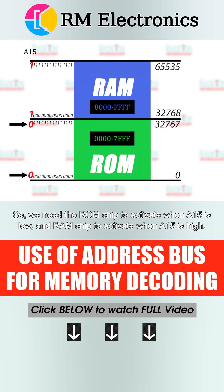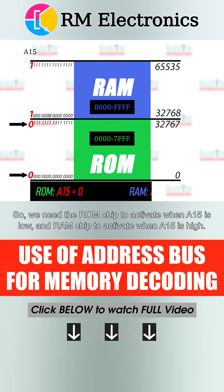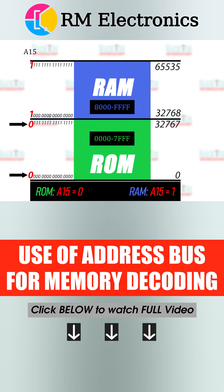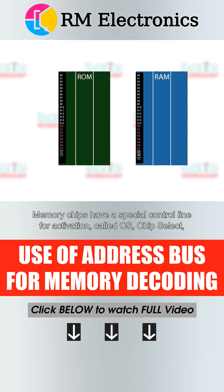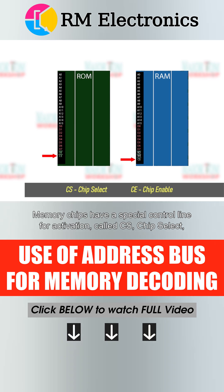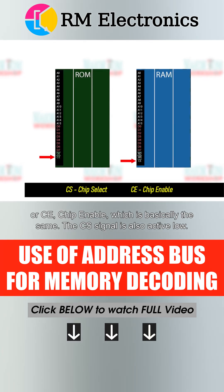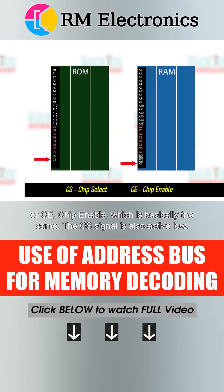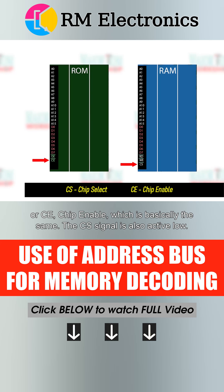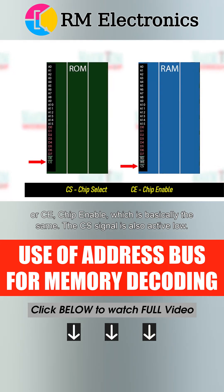We need the ROM chip to activate when A15 is low and the RAM chip to activate when A15 is high. Memory chips have a special control line for activation called CS, chip select, or CE, chip enable, which is basically the same. The CS signal is also active low.